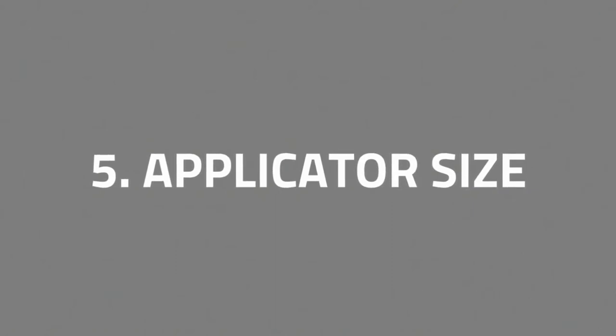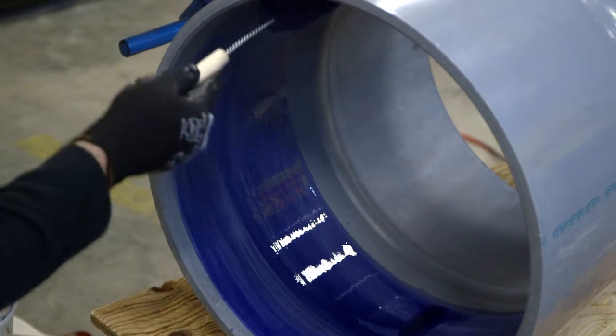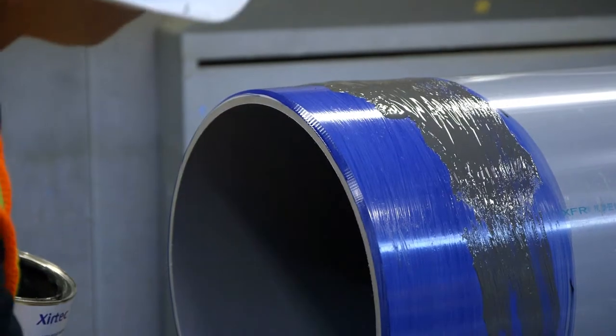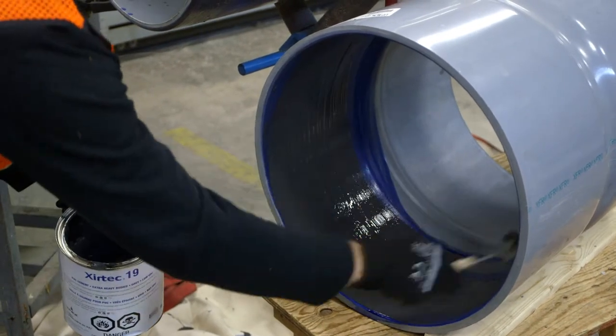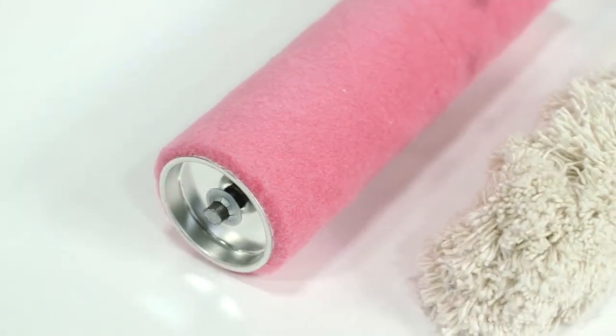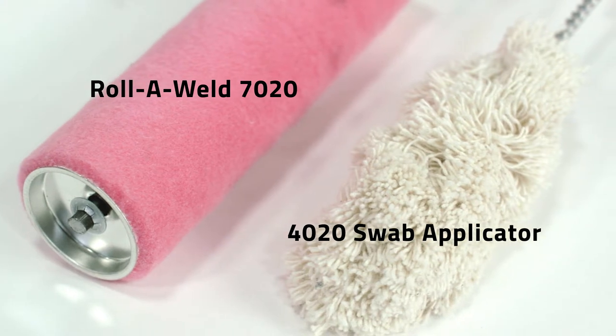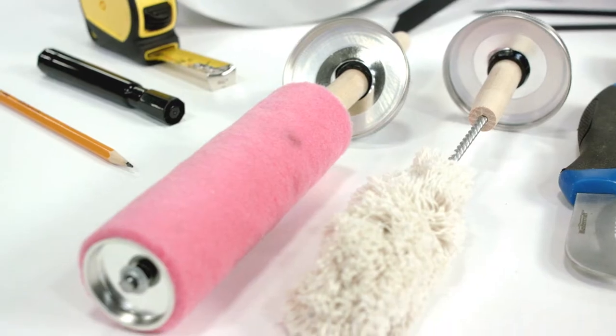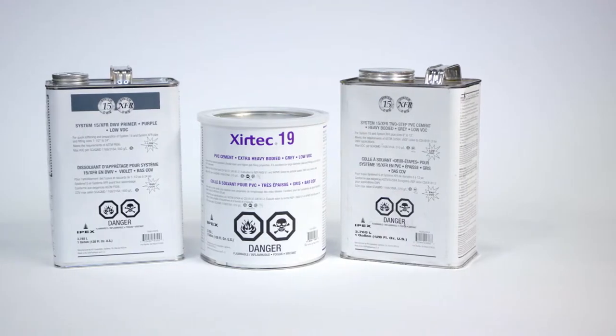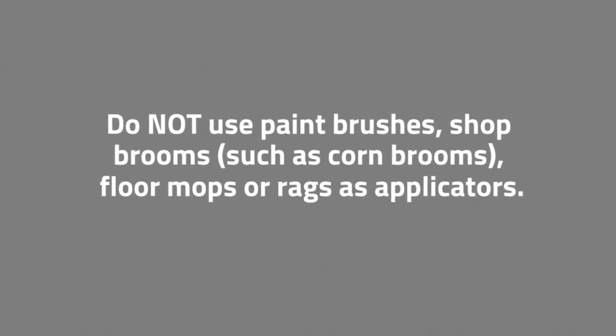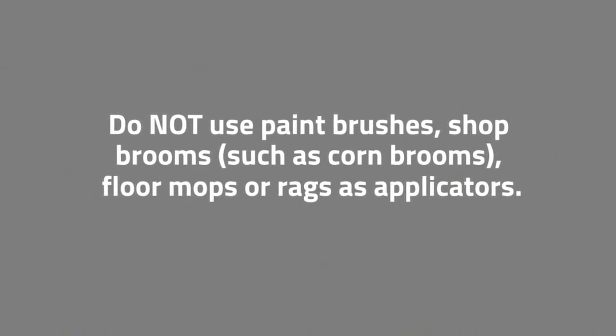Five: applicator size. Use the appropriate roller or swab applicators in accordance with your pipe diameter. Proper applicator size is critical to ensure the correct amount of primer and solvent cement is applied to the pipe, fittings, and accessories. The following applicators are available: Roll-A Weld 7020 7-inch Roller for pipe diameter 6 inches or larger, and the 4020 Swab applicator for pipe diameters 6 inches or larger. Both of these applicators fit into IPEX's standard MT648 one-gallon can. Do not use paintbrushes, shop brooms, such as corn brooms, floor mops, or rags as applicators.